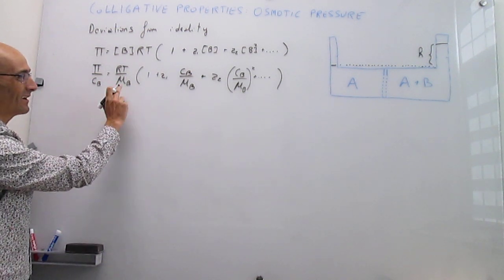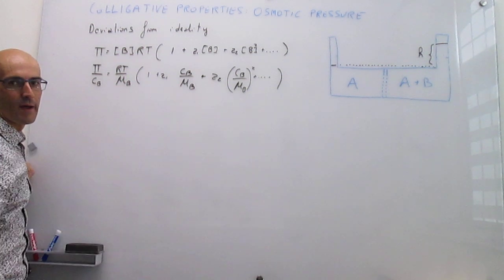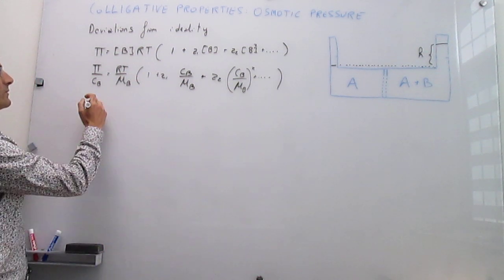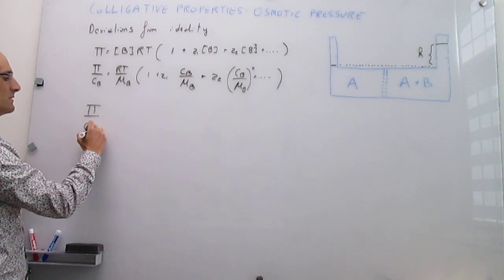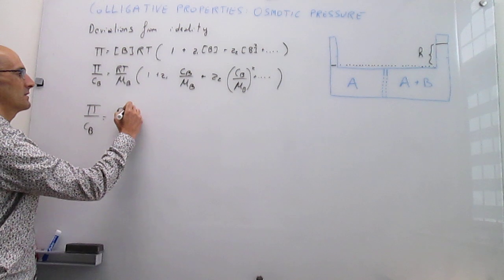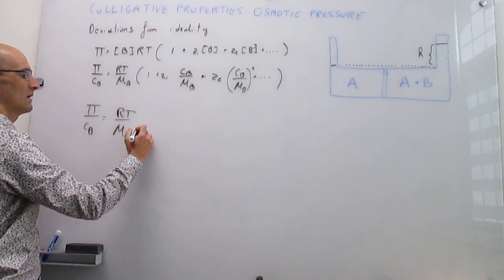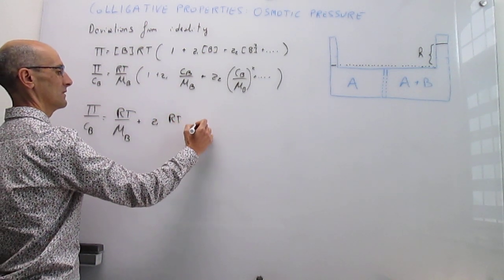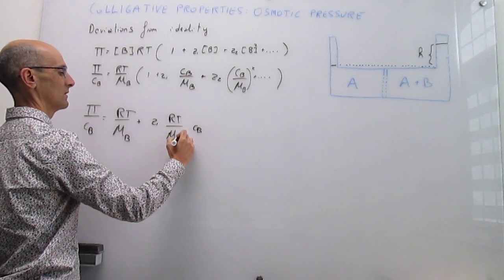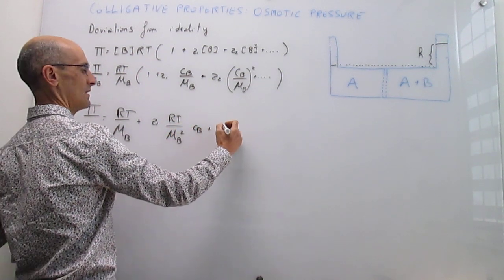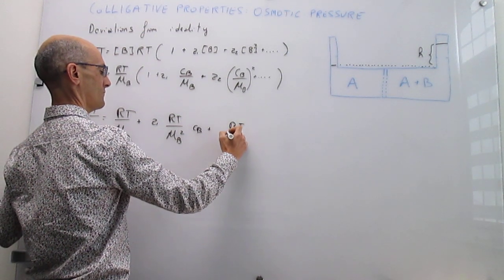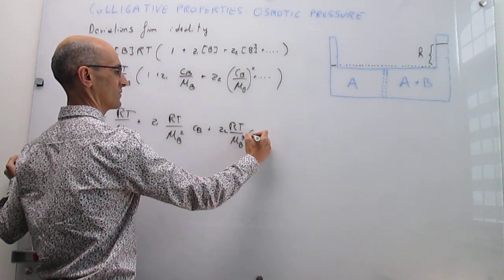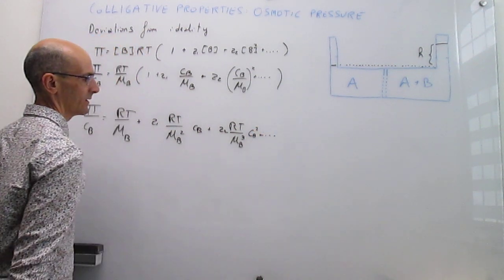Okay, so we have to work with this, and again, our unknown, what we want to solve for is the molar mass of the solute. So again, how do we do that? Well, the first thing that we're going to do here is simply operate. And we can operate by doing the following: π over C_B is going to be equal to RT times the molar mass of B, plus C1 times RT times C_B over the molar mass of B squared, plus RT C2 over the molar mass of B cubed times C_B squared, plus all these terms.